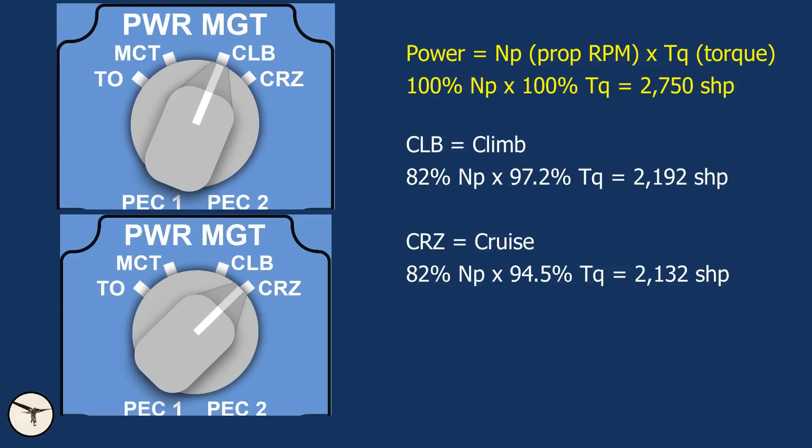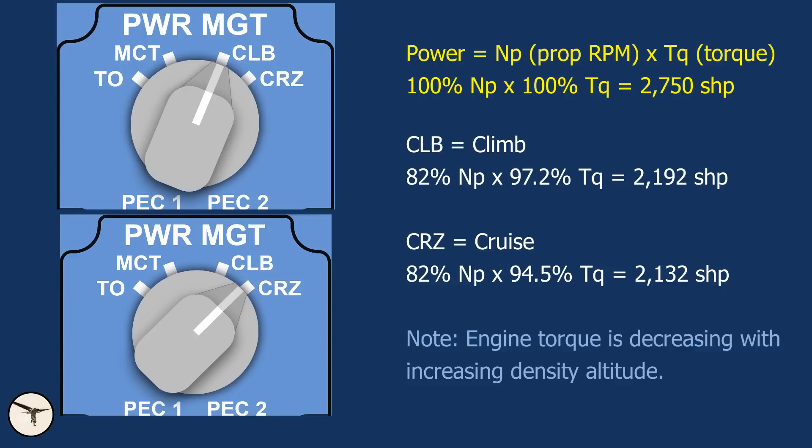Then we have the climb position and cruise. In those positions, NP is reduced to 82%. This reduces propeller noise, especially in the cabin. So when we take off, the power management is in takeoff position, and when we are passing acceleration altitude — which is at least 400 feet above the runway — we select climb. After leveling off and reaching cruise speed, we select cruise power, which is slightly less than climb power.